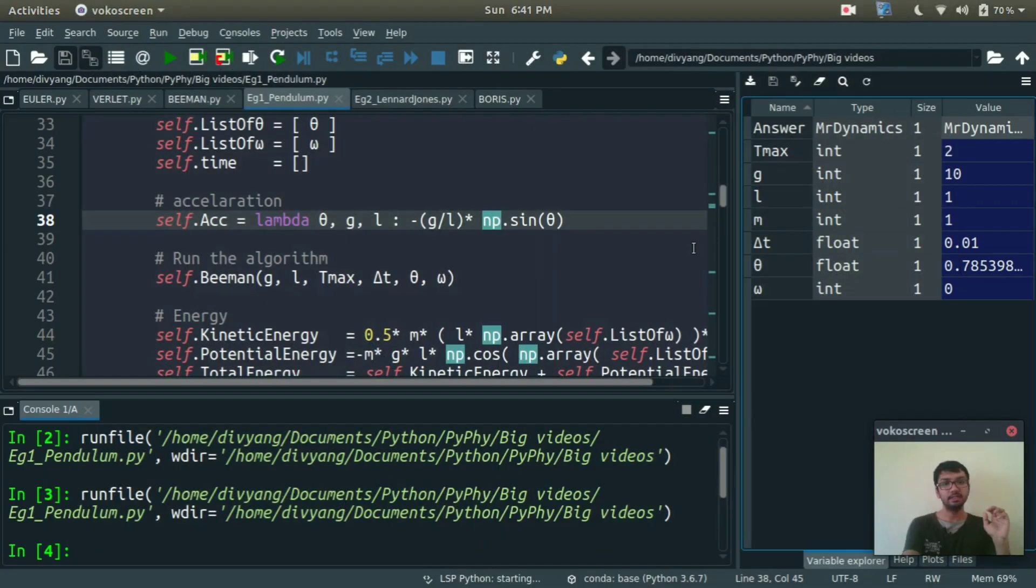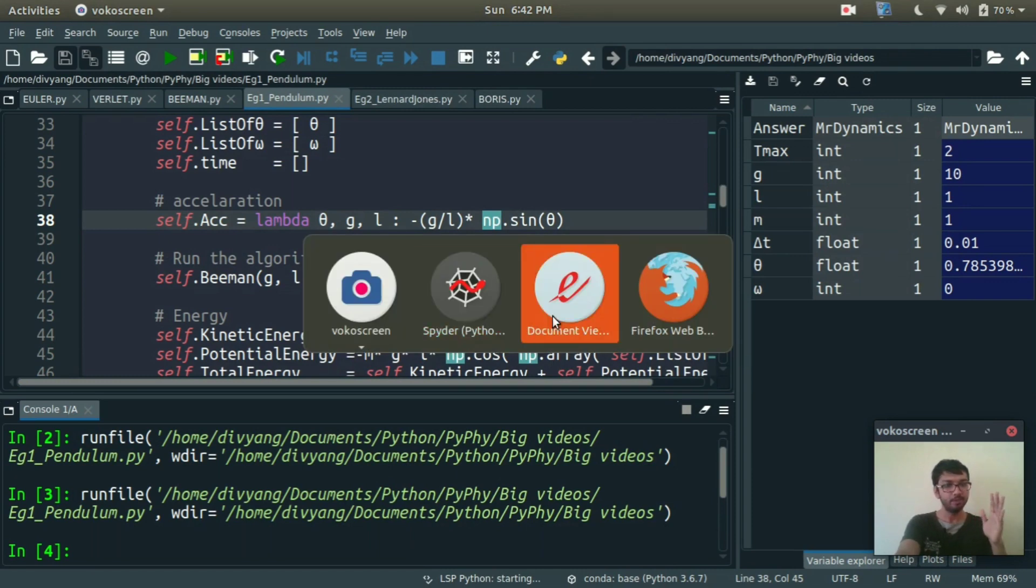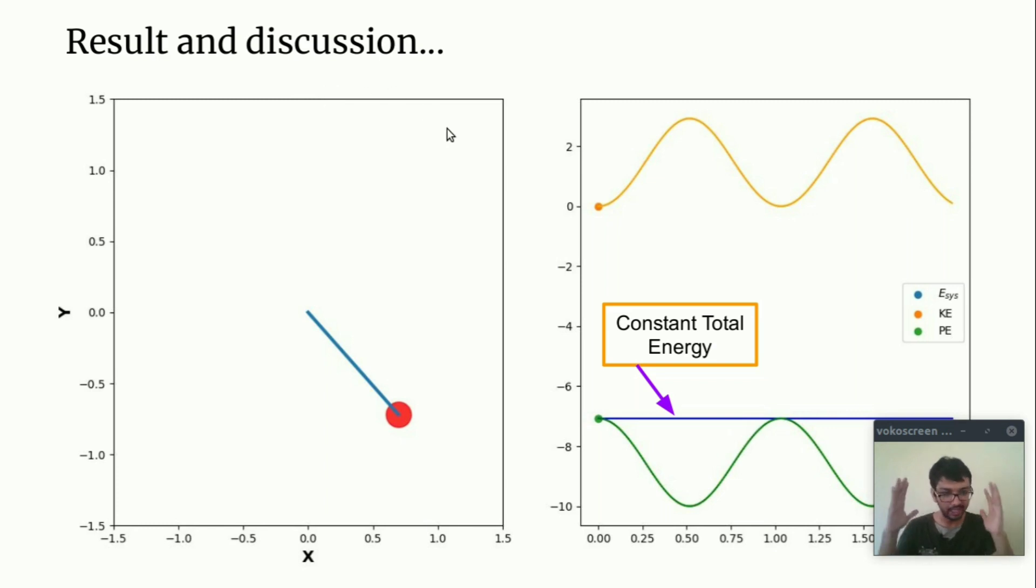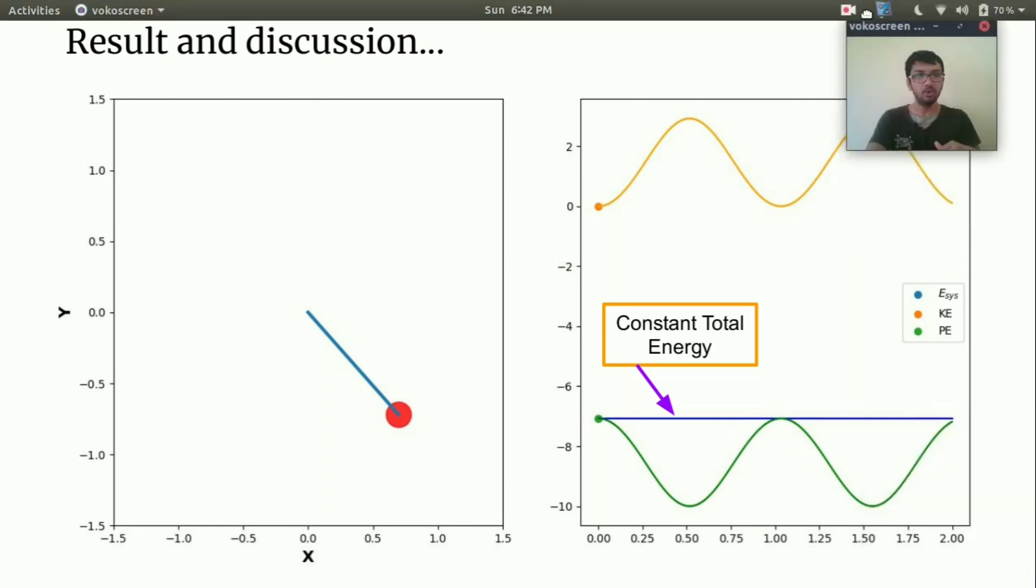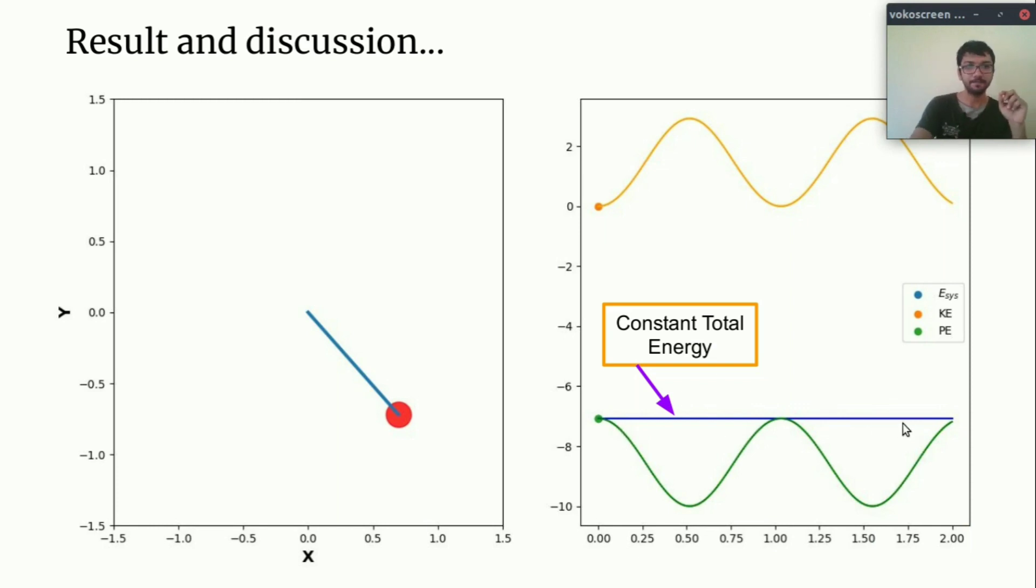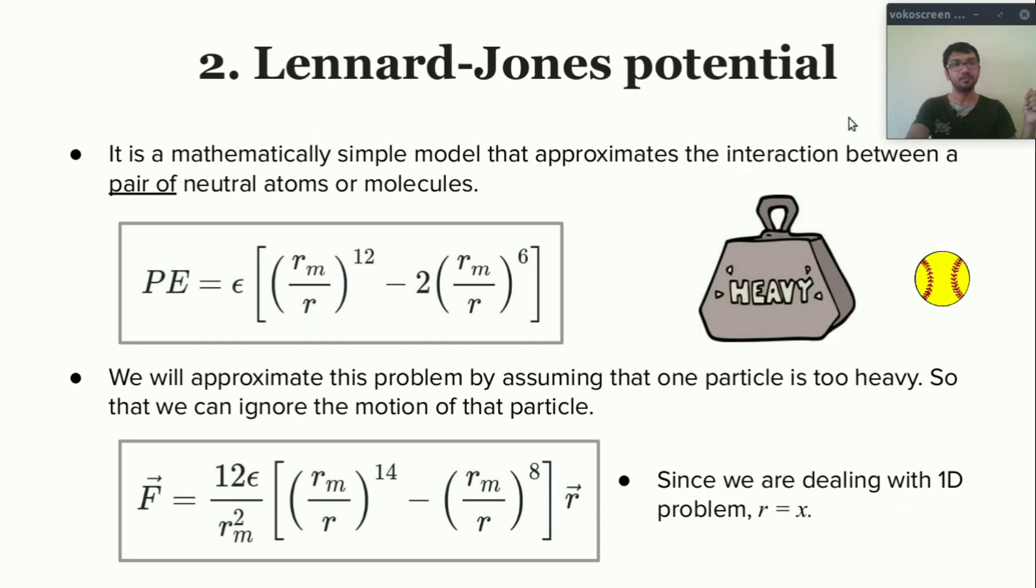And here this blue line is the total energy of the system. Let's go back to the presentation for result and discussion. Here's the total energy. As you can see, throughout the trajectory it is remaining constant, which means we are getting the correct result. As we have seen in previous video, the Beeman algorithm is giving very less error compared to Verlet and Euler-Cromer method.